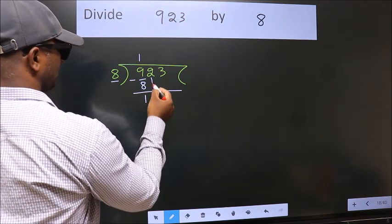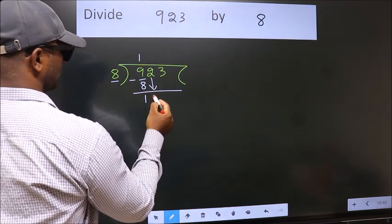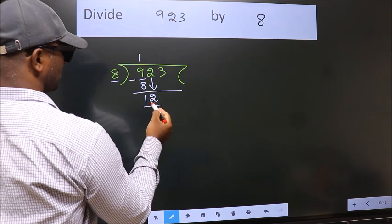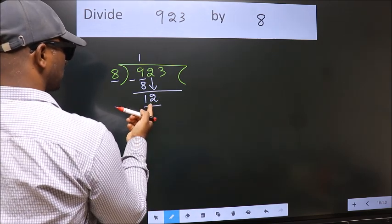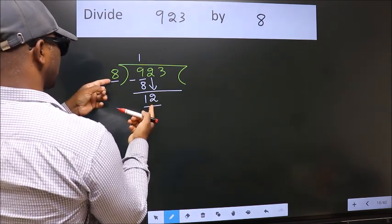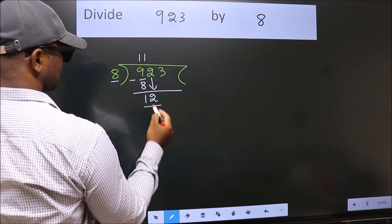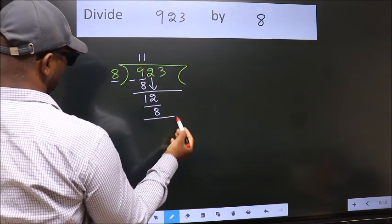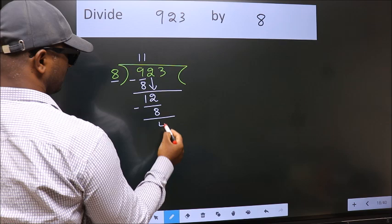After this, bring down the beside number. So, 2 down. So, 12. A number close to 12 in 8 table is 8 once 8. Now, we subtract. We get 4.